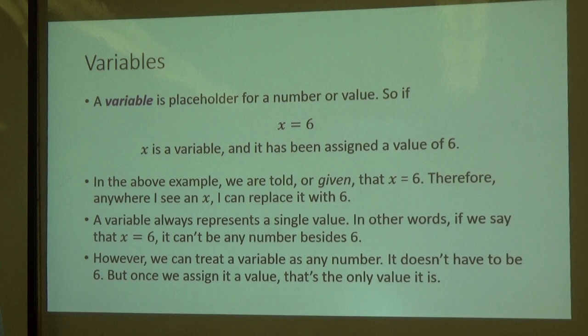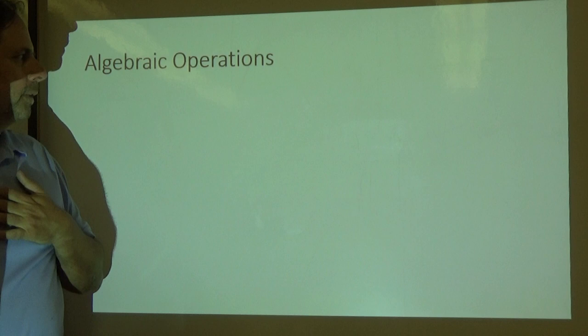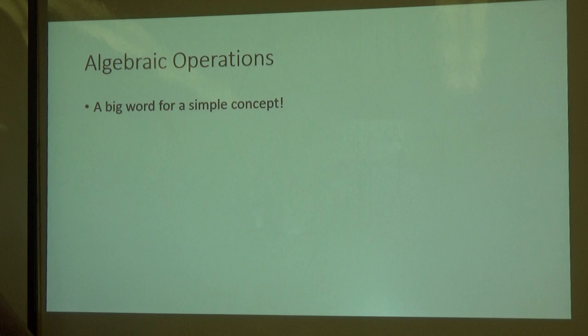However, we can treat a variable as any number. It doesn't have to be 6. But once we assign it a value, that's the only value that it is. If it hasn't been assigned a value, then it could be any number. We don't know.